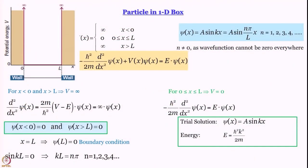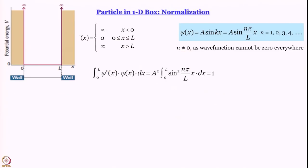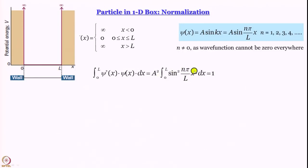Before that, let us finish with ψ — let us determine the value of A and see what these wave functions look like for different values of n. To get A we perform normalization. Since ψ = 0 outside the box, we do not need to integrate from −∞ to +∞; it is enough to integrate between 0 and L. So we compute the integral from 0 to L of ψ*(x) ψ(x) dx, which gives A² times the integral from 0 to L of sin²(nπx/L) dx = 1.